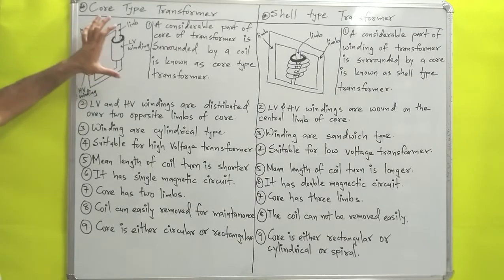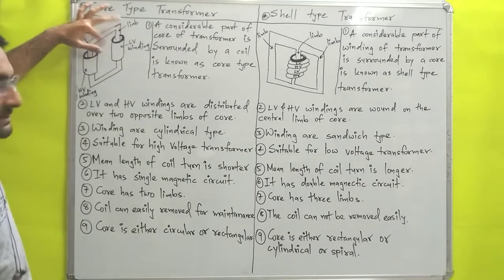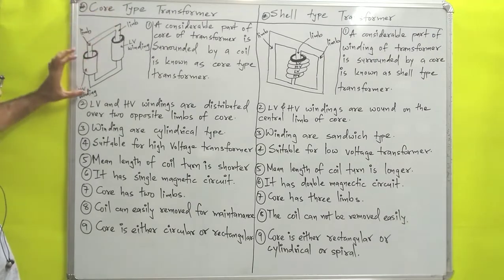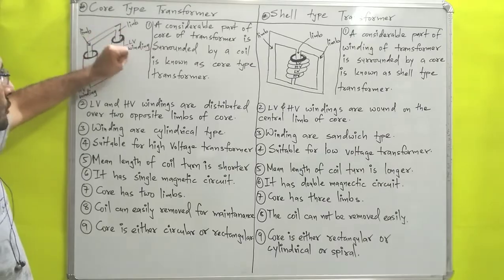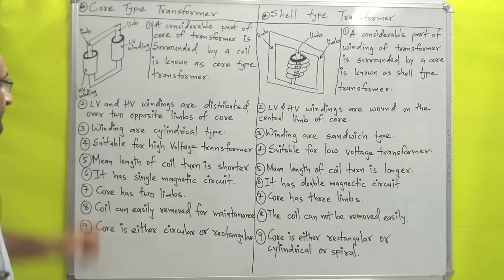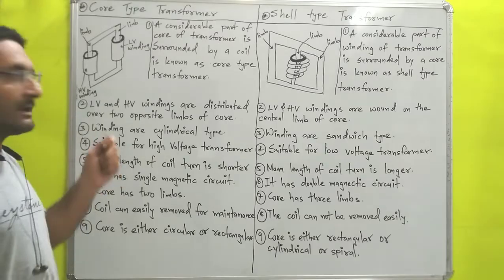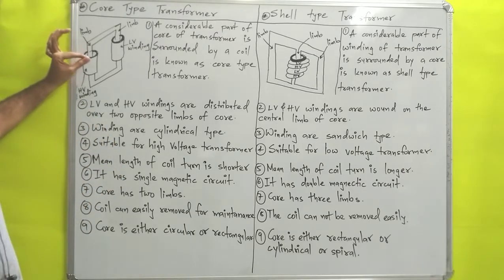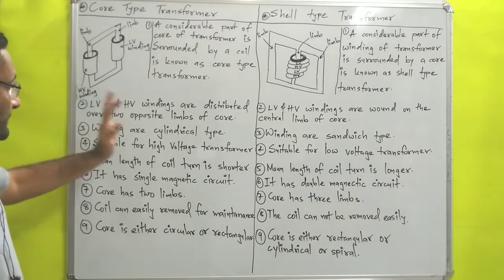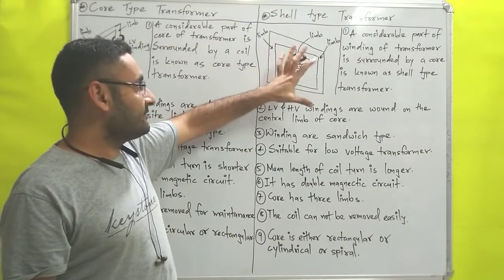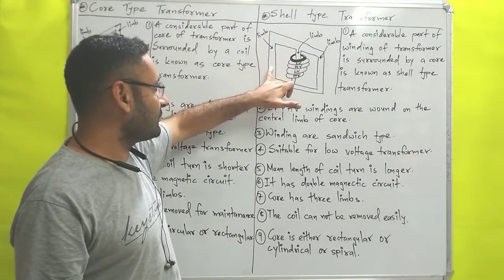Over here is the figure of the core type transformer, in which you can see that there is one core with two limbs. On one side the high voltage winding is wound, and on the other side the low voltage winding is wound. These windings are wound very tight, or very near to each other, so that the length of winding is decreased.